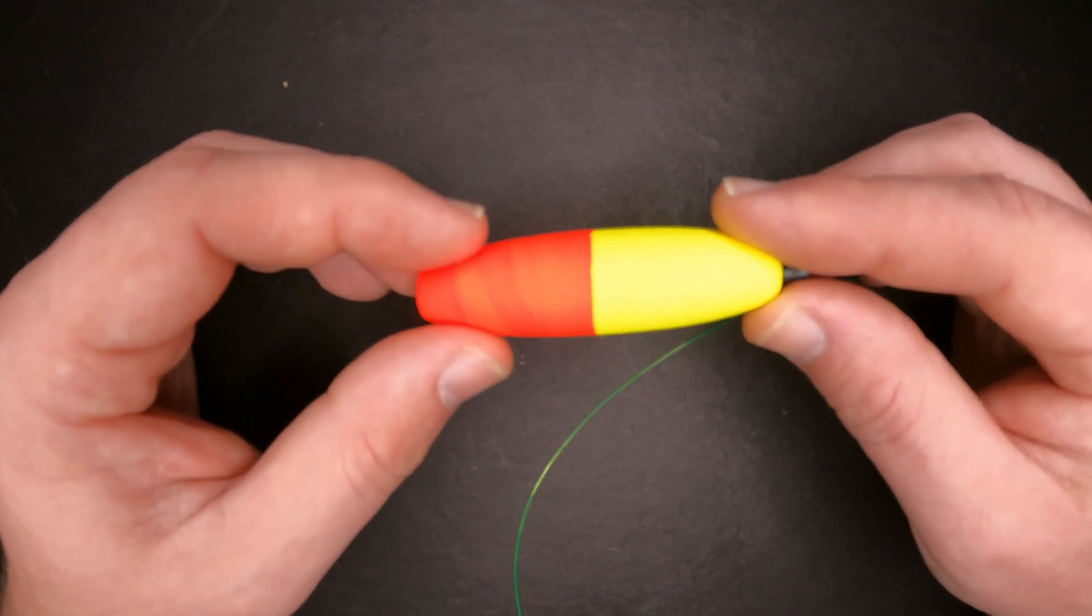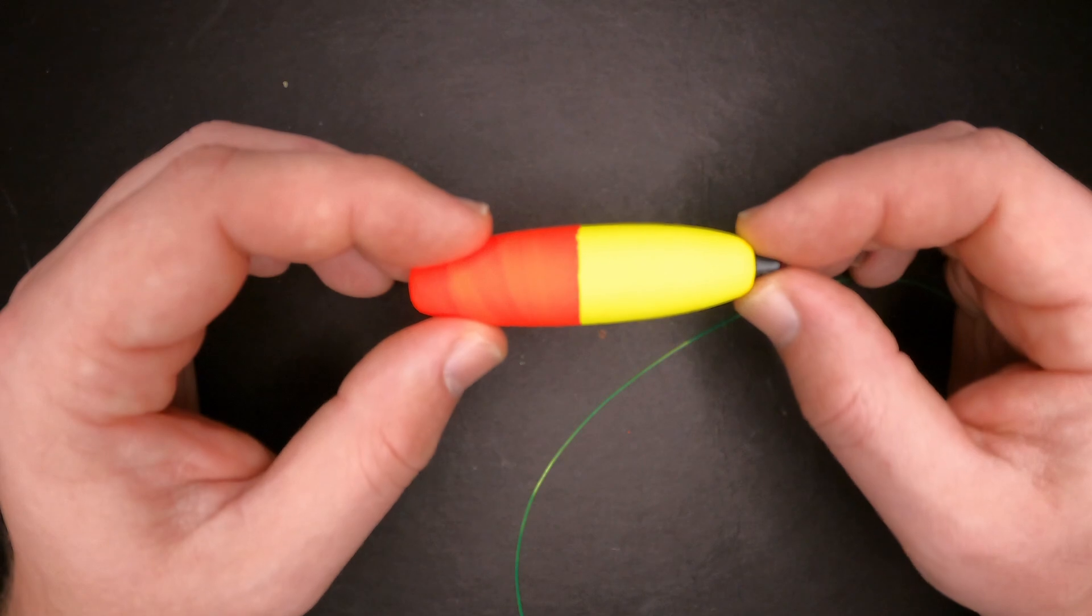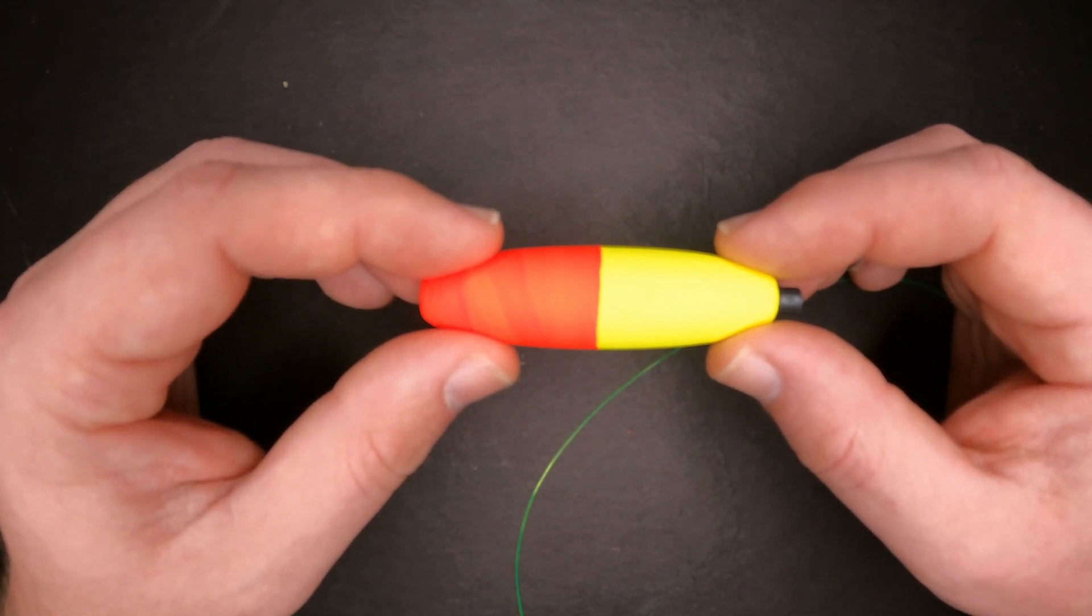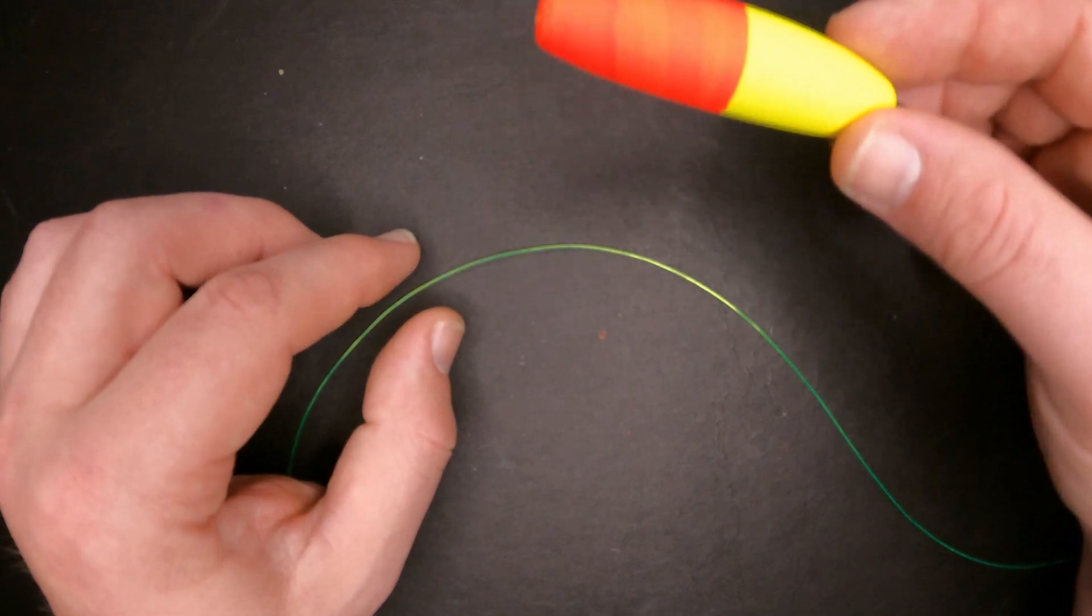Very often it is a cigar shaped float like this one, it's usually about two to three inches long. It's attached to the leader and the whole point of it is to elevate the bait in the water column. So let's get to tying this thing.